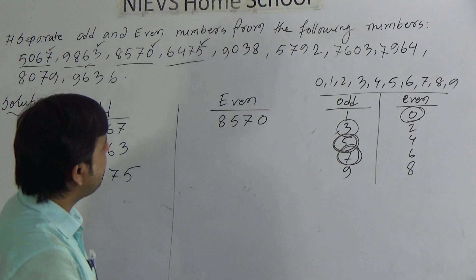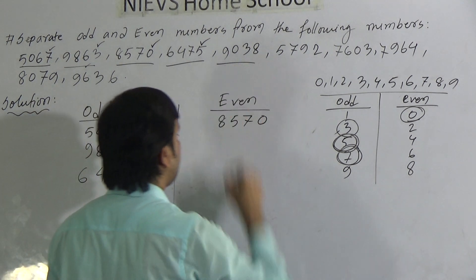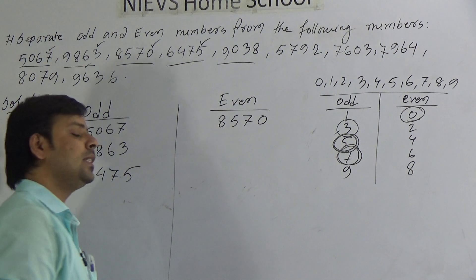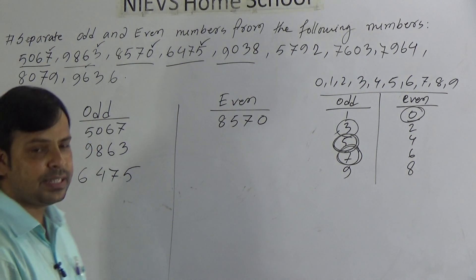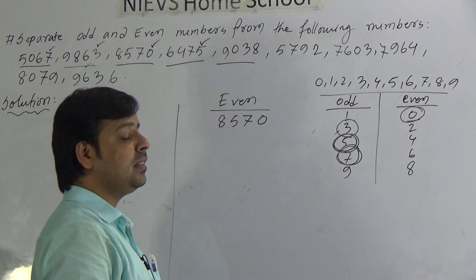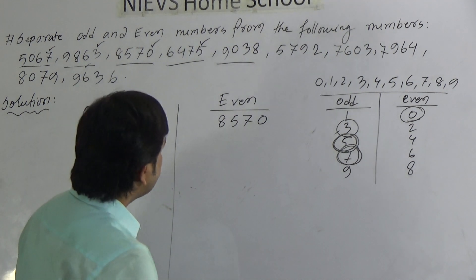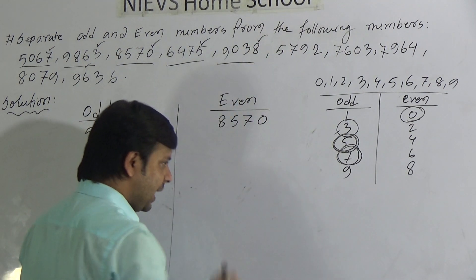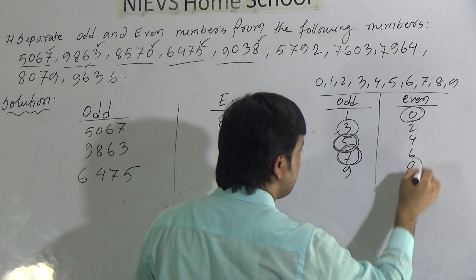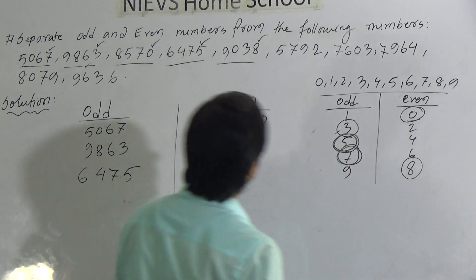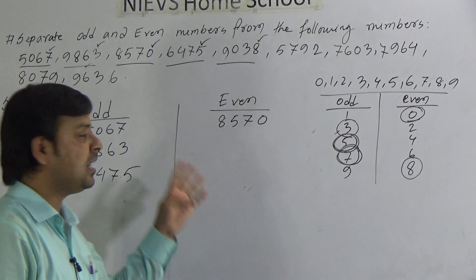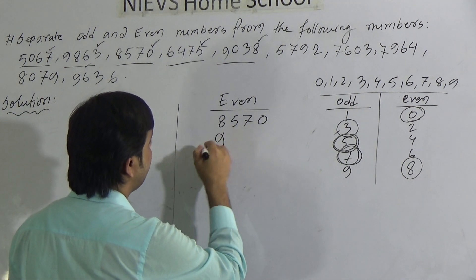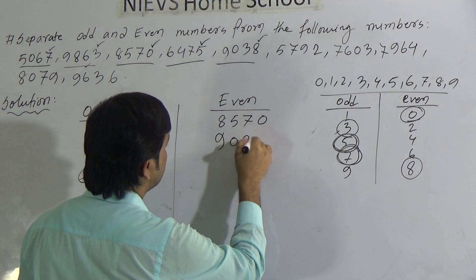Then see the next number: 9038. Here the unit place is 8, and you know that 8 is in even. So the number must be even. We write 9038 under even.